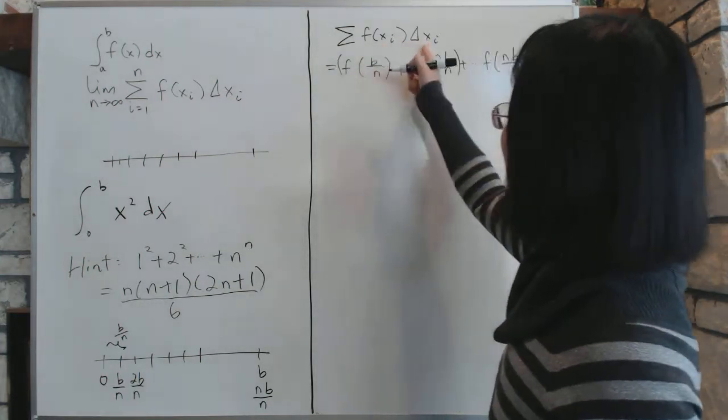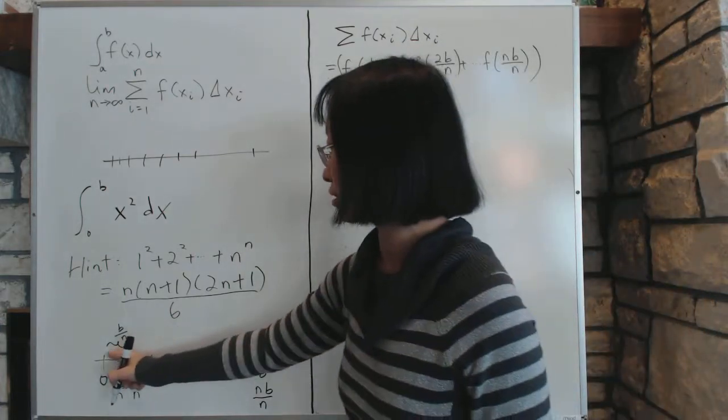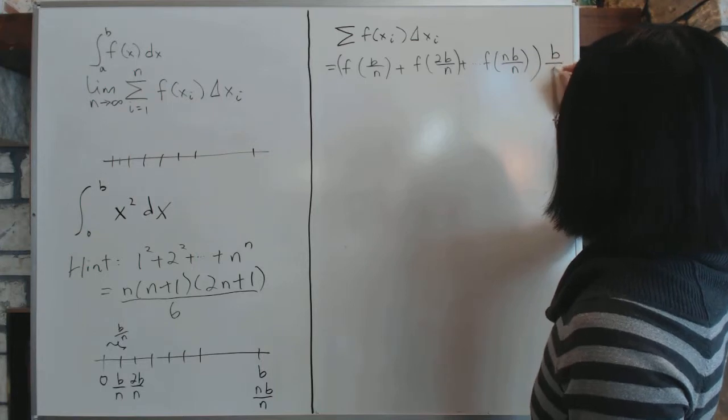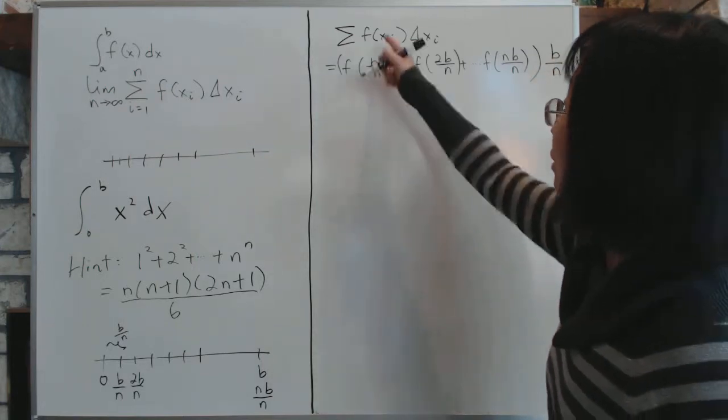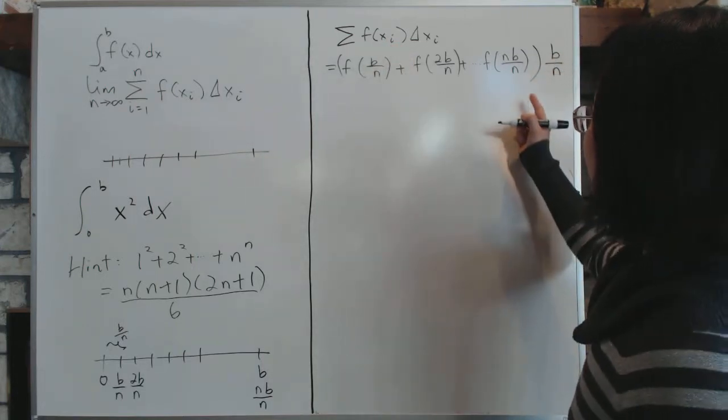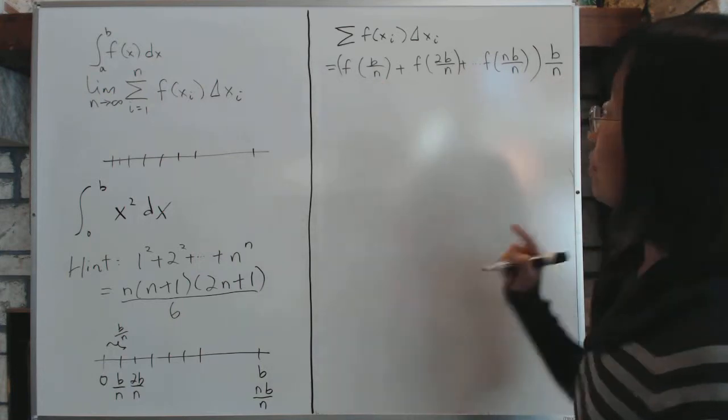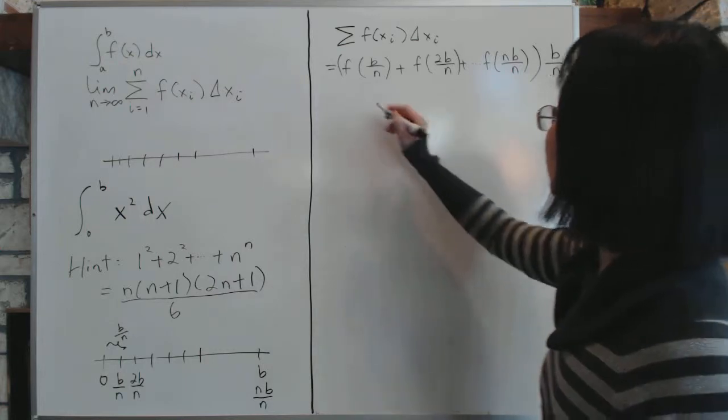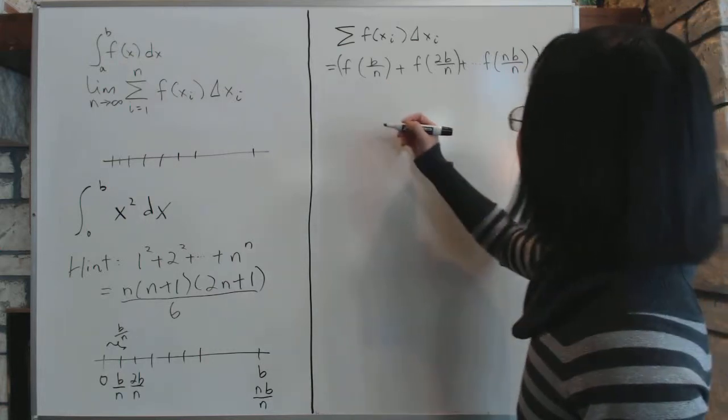which is the same for our choices, b over n. Okay. This is how we are going to do this specific summation. We'll take the end point, and each one will multiply by the interval, which is, we choose it to be the same. So add it all up.